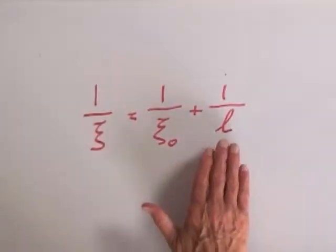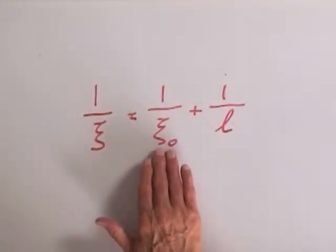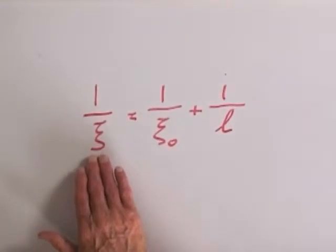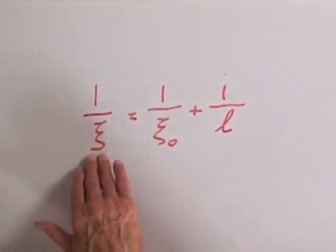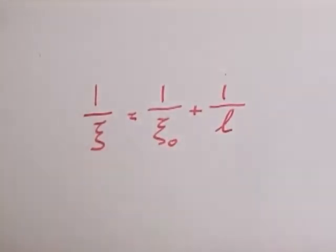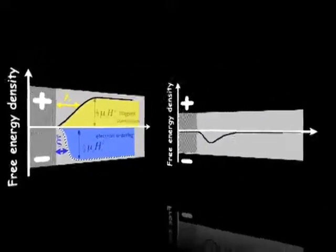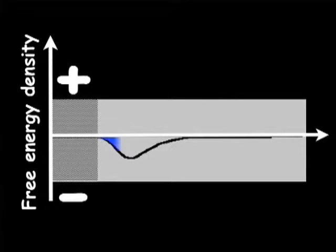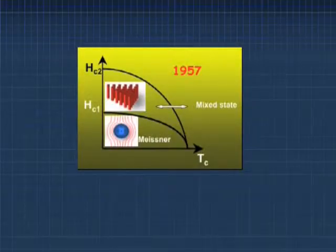When the mean free path is short compared with the natural coherence length, in the end the actual coherence length is quite short. And that means that superconductivity can change into a normal state very quickly. So impurities enable you to get a quick transition from normal to superconducting. And that is the condition under which you get a negative surface energy and a condition under which superconductivity likes to survive even above the critical field.